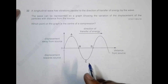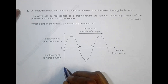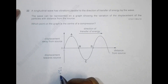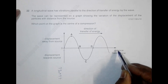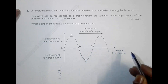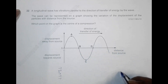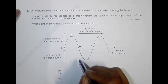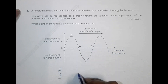Let me say the source is over here, and from here the waves are going because this is the distance from the source, meaning the energy is traveling in this direction. Let me draw point B here on the diagram.